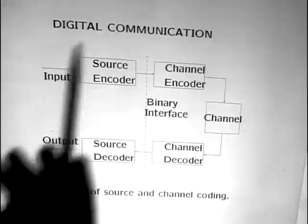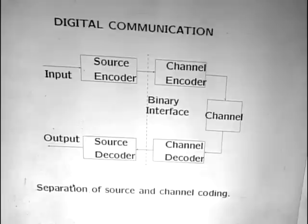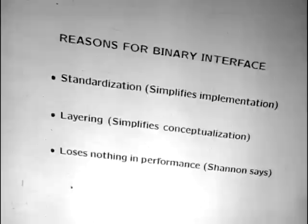Digital communication is communication where there's a binary interface between source and destination. The source is very often analog — the most interesting sources are analog. The channel is often analog — most interesting channels are analog. What's important is that you have this binary interface between source and channel coding.